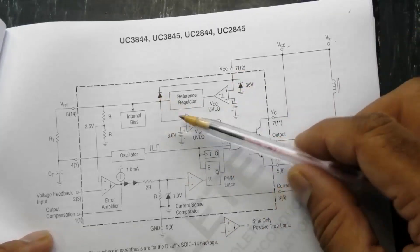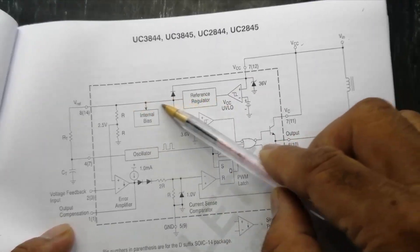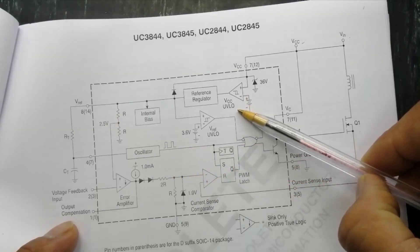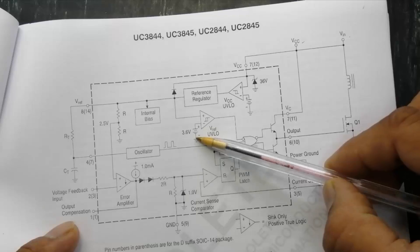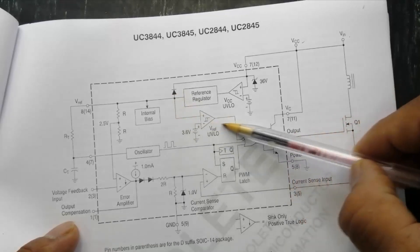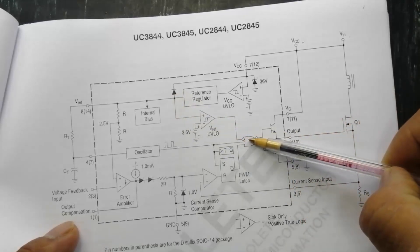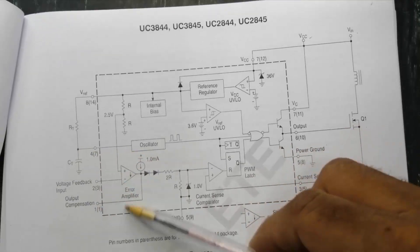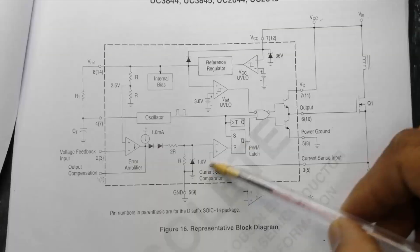So it will allow to adjust the output. Here is output drive section, it will take voltage from VCC pin. And here is reference regulator, and it will apply these voltage to the V reference pin. VCC UVLO, V reference UVLO 3.6 volt, and it will adjust here, give us standard frequency.